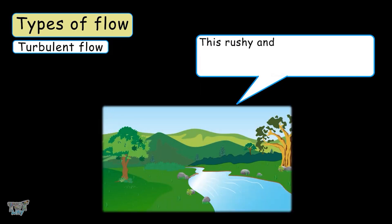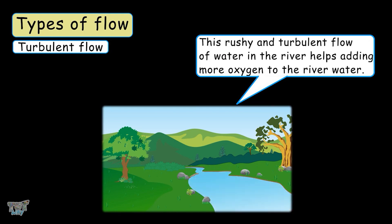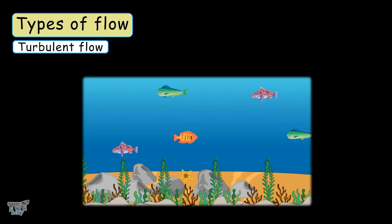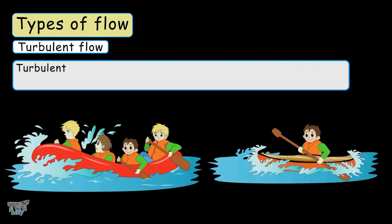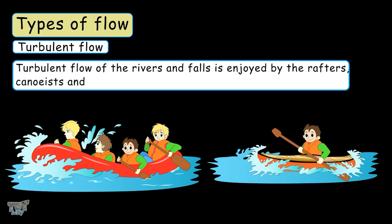This rush and turbulent flow of water in the river helps to add more oxygen to the river which is required by the aquatic life of the water bodies. Turbulent flow of the rivers and falls is enjoyed by the rafters, canoeists, and kayakers.